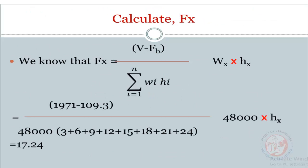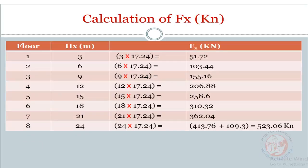Now calculate FX. We know that FX equals V minus Ft divided by summation of Wi Hi, times Wi times Hi. We can calculate FX equals 17.24. The final calculation is shown in a table: first column is floor, second column is floor height from ground level.